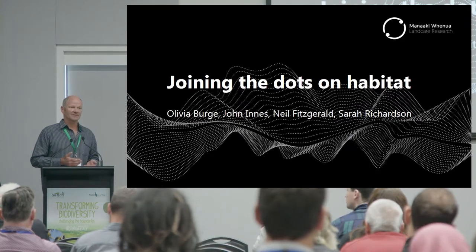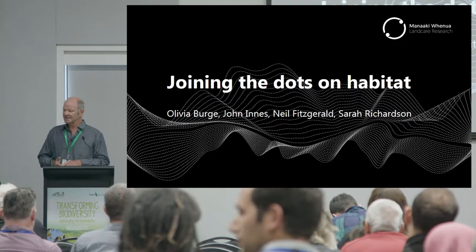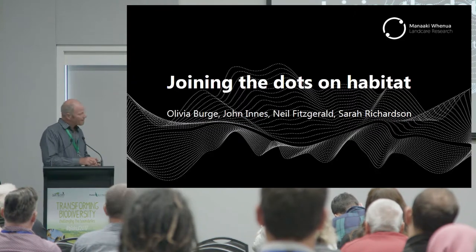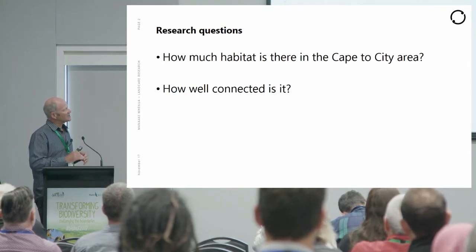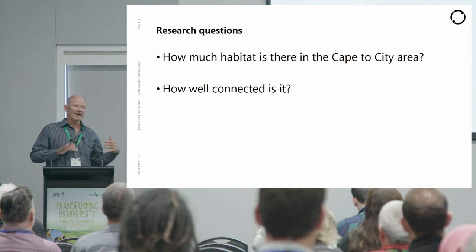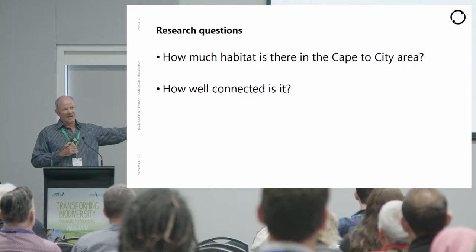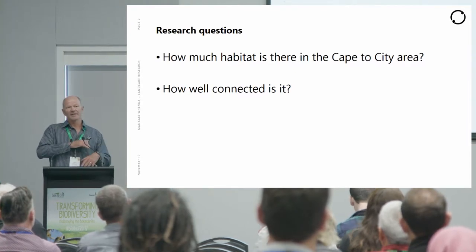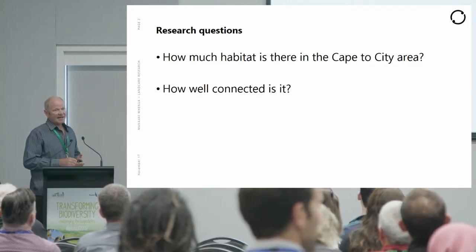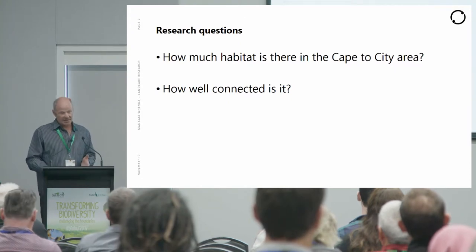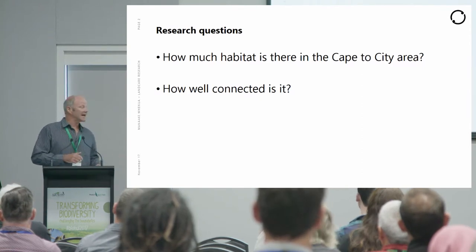This research is all about the bottom-up processes when trying to restore birds. There's nothing about predation — it's about habitat. The questions being asked are: how much habitat is there, and how well connected is it? This modelling approach has generic application if you're worried about habitat connectivity. The focus is on Cape to City, but the approach applies broadly. Connectivity is important for natural bird dispersal and also when translocating birds into these systems.